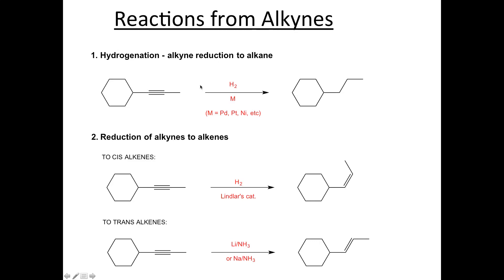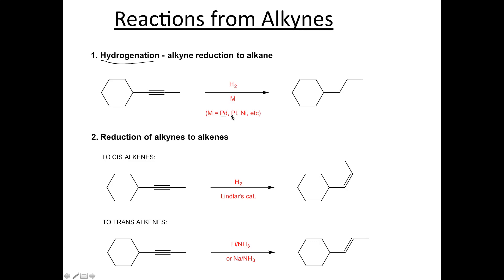Our first reaction we're going to talk about is hydrogenation. In this reaction we're going to be reducing an alkyne all the way to an alkane. The reagents you use to do this are H2 and some metal. Most common metals that are used to do this are palladium, platinum, or nickel.